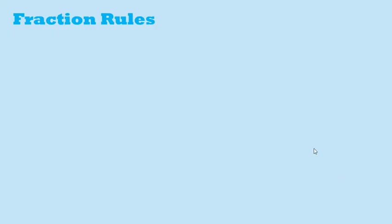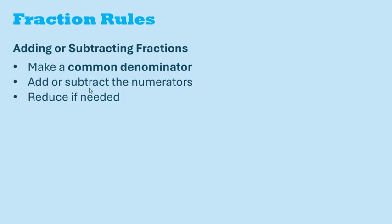Alright, next are fraction rules. When adding or subtracting fractions, we make a common denominator, add or subtract the numerators, and reduce if needed. For example, here we can make a common denominator of 12, and then add the numerators to get 11 12ths as our final answer.